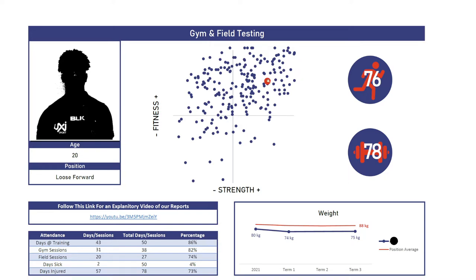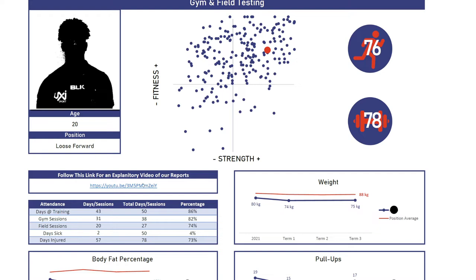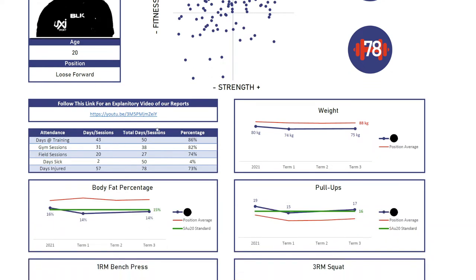This player in particular scored fairly well. If we look at this chart, people who score up in this corner are very fit and very strong and both values will be close to a hundred. Players who score down in this corner are not very fit and not very strong. Then here we have our attendance chart, showing days attended at training, gym sessions, field sessions, days sick, days injured, the total possible sessions, and the percentage — the same format from term one to term three.